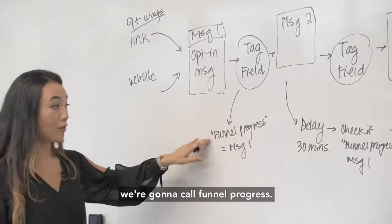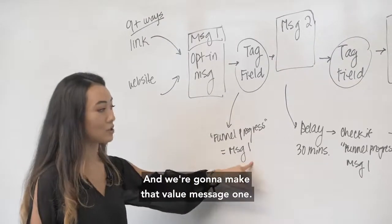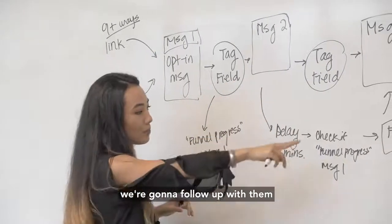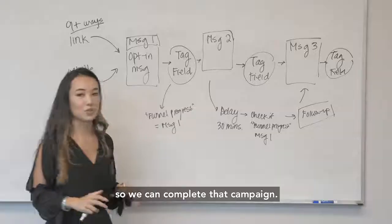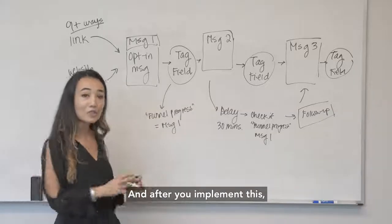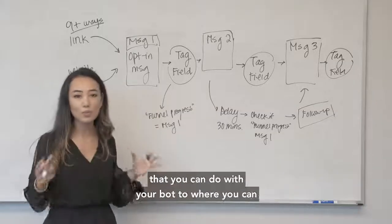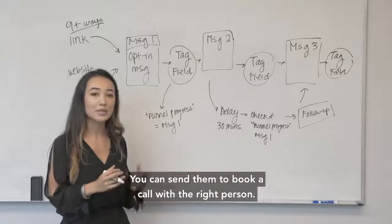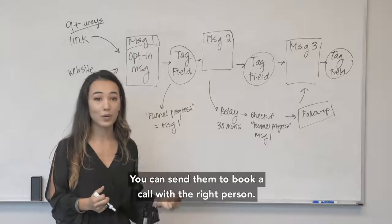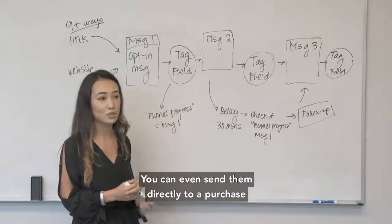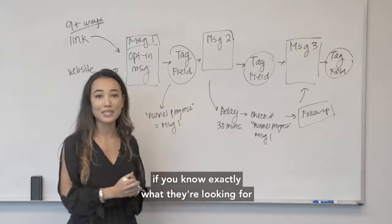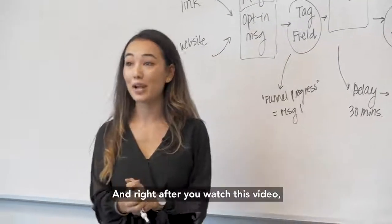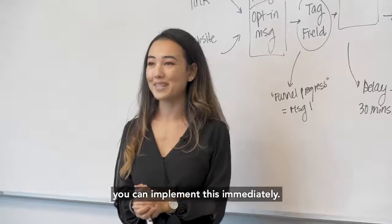The field I told you guys we're going to call funnel progress, and we're going to make that value message one and then we're going to move on. But remember, if someone doesn't finish message two we're going to follow up with them and then send them to message three so we can complete that campaign. After you implement this, there's so much more that you can do with your bot to where you can now send someone relevant content information, you can send them to book a call with the right person, you can even send them directly to a purchase if you know exactly what they're looking for based on the questions that you ask. I hope this is helpful for you guys and right after you watch this video you can implement this immediately.